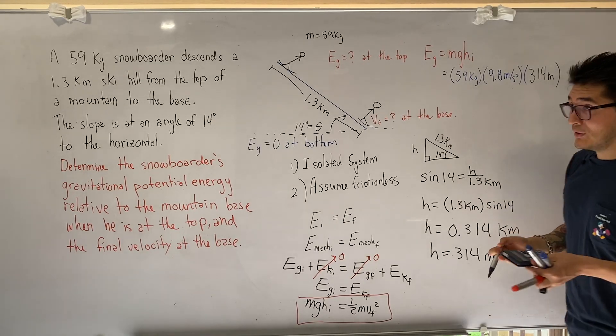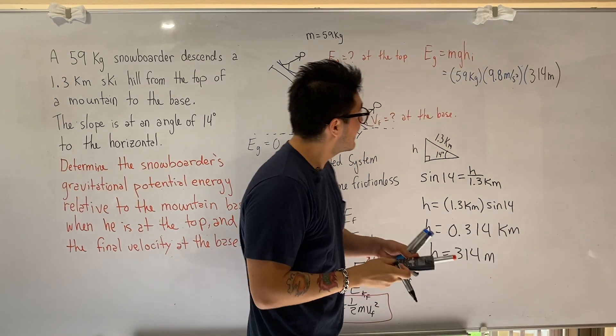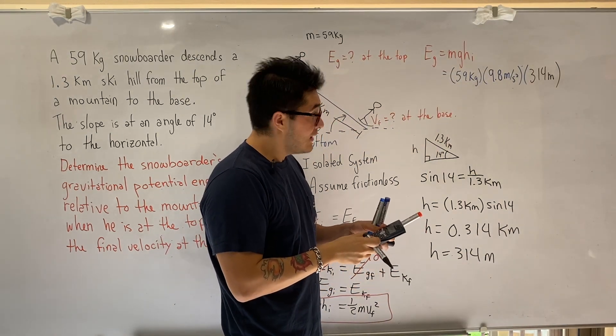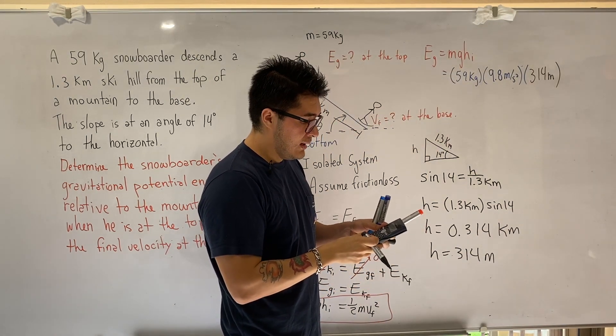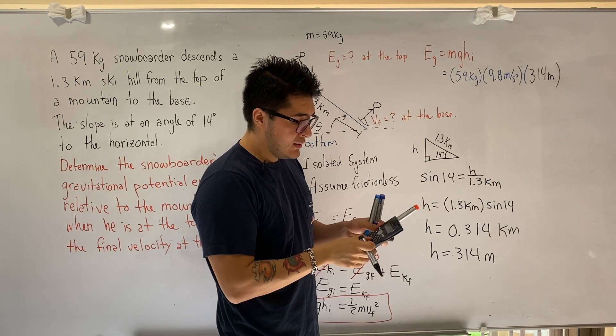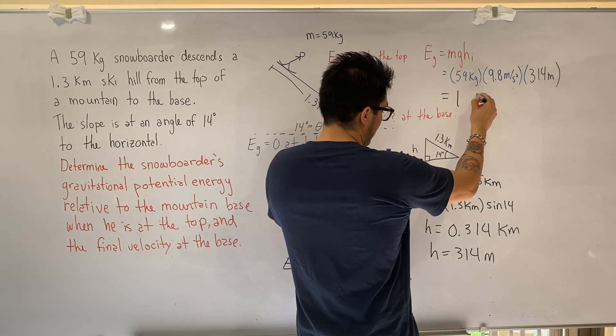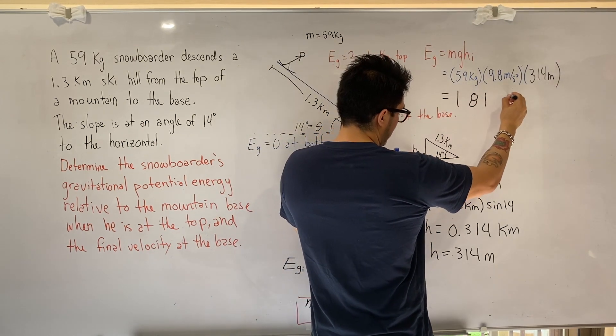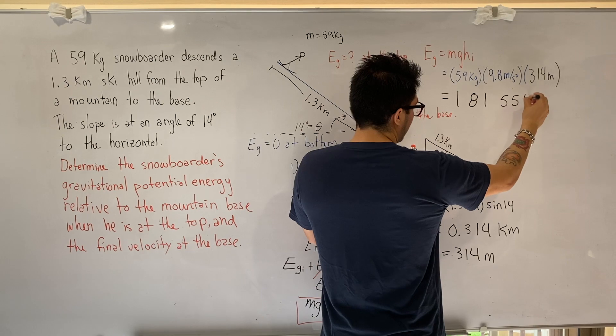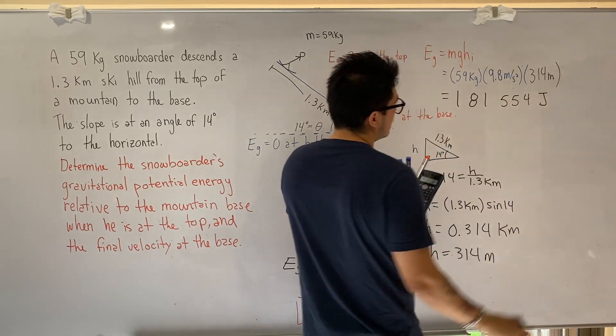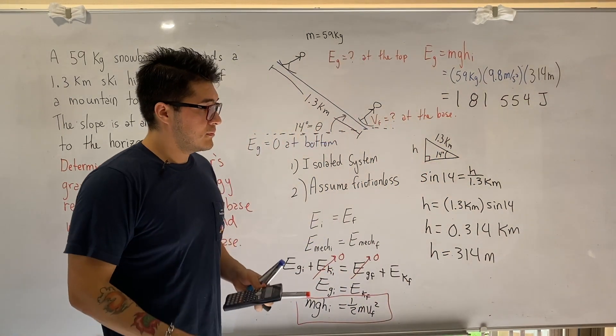314 meters. Once again, I get nervous putting it into the calculator. So let's see. 59, 9.8, 314. It gives us, wow, that's a lot of joules. 181,554 joules. Awesome.